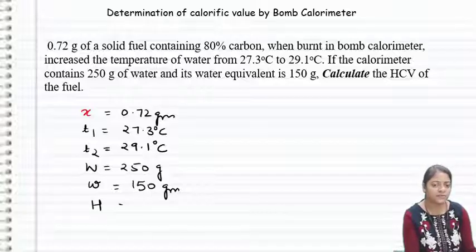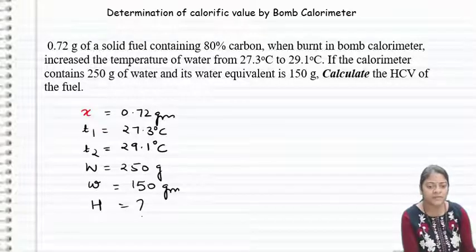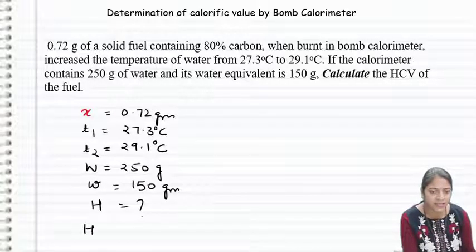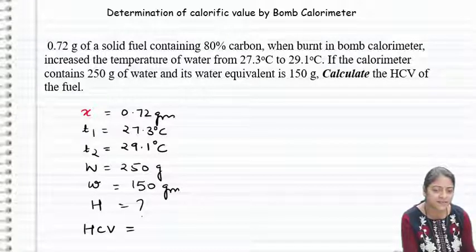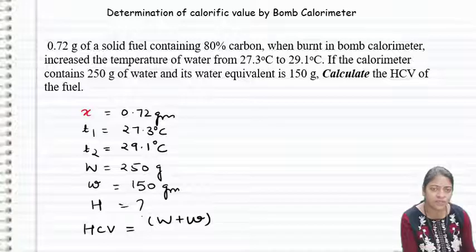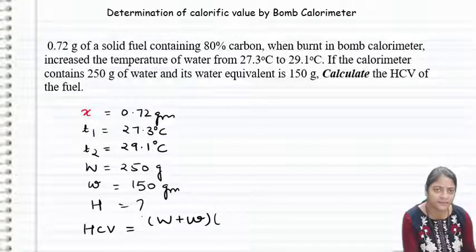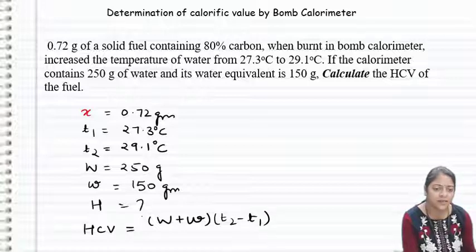We have been asked what will be the HCV. Let's look at HCV or gross calorific value for bomb calorimeter. We can calculate with the formula: capital W plus small w. Capital W is water, small w is water equivalent, multiplied by delta T, which is the temperature difference. So we can write T2 minus T1 by x.